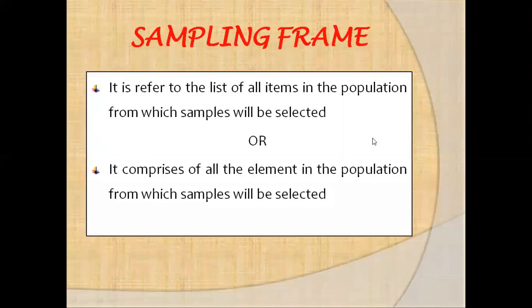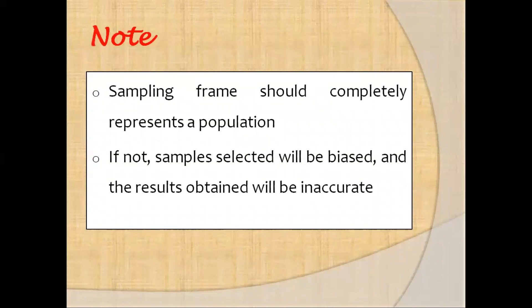So by definition, sampling frame is referred to as the list of all the items or the elements that are present in the population from which samples will be selected. However, the selected sampling frame should represent the population, because if not the results would be biased and inaccurate.